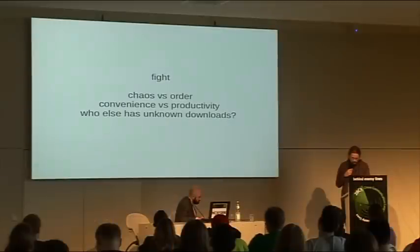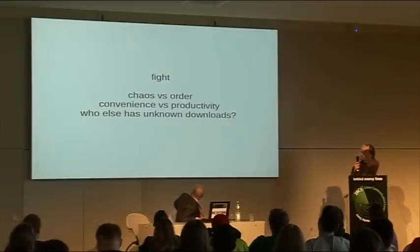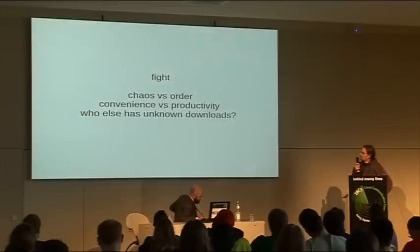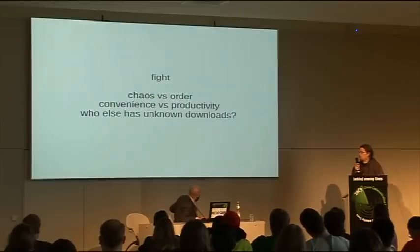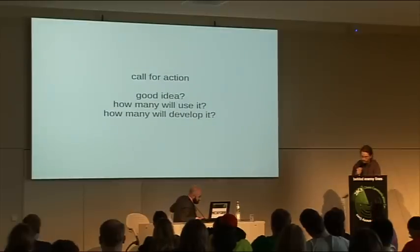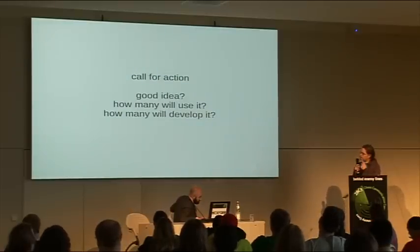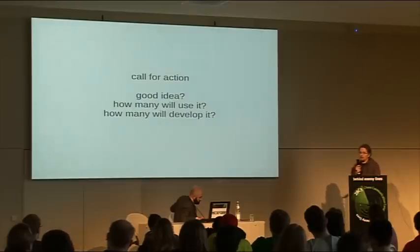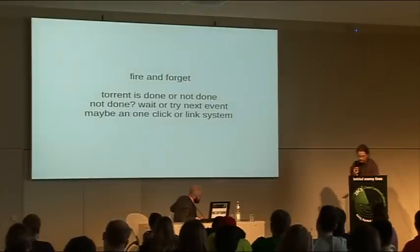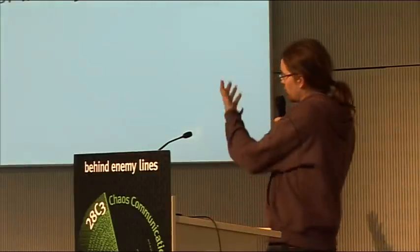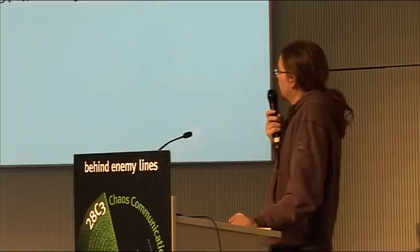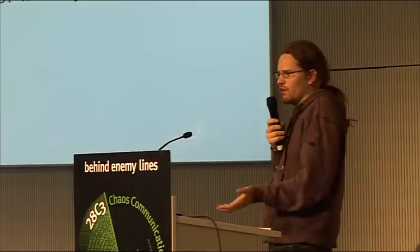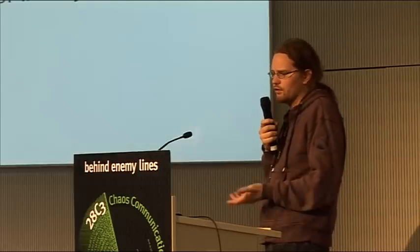Now we have chaos. Should we use an order system? Is it more productive or not? Let's talk about it. Do you think it's a good idea? Will there be users using it? Because it's harder — you need to label your stuff, and you need to do work before you download something. Are there developers that will help us? That's all the questions and the possibilities. It's a fire-and-forget system. Torrent is either done or not done — a folder where you don't know if it downloaded correctly is gone. It's there or not.